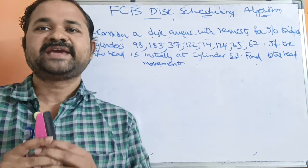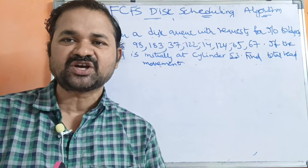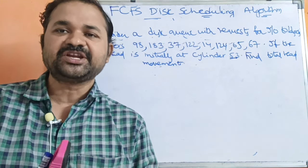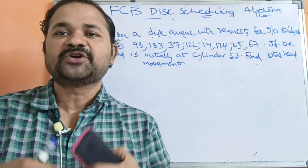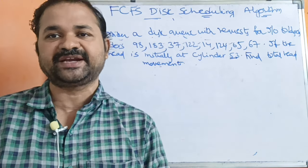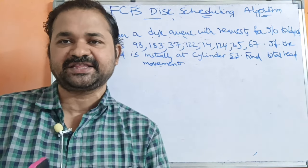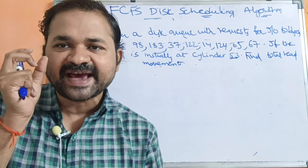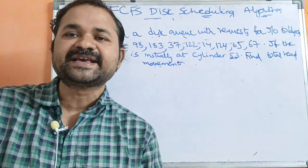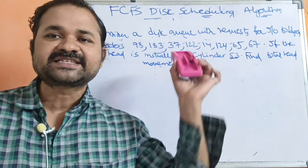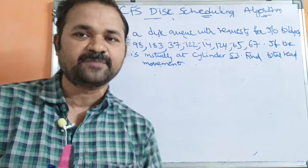Let us discuss the FCFS Disk Scheduling Algorithm. Scheduling algorithms decide the order in which jobs are to be executed. FCFS means First Come First Served — the job which has come first will be served and executed first. Let us discuss the FCFS Disk Scheduling Algorithm with the help of an example.